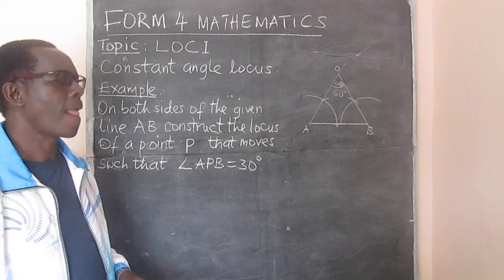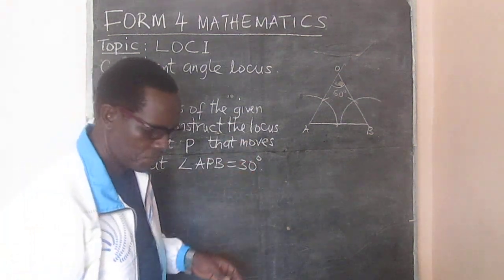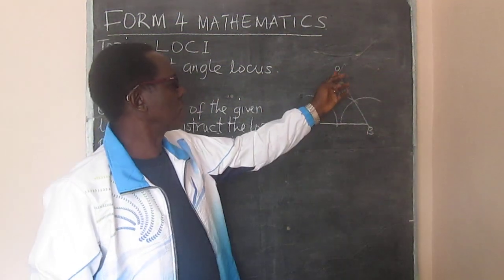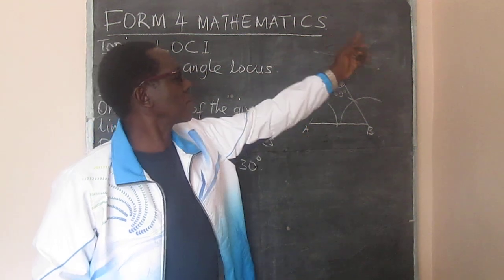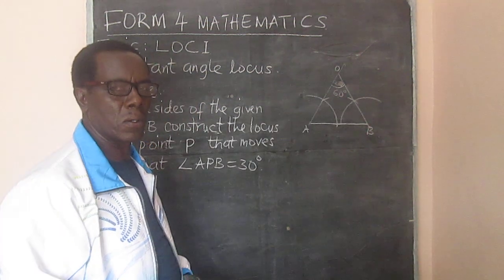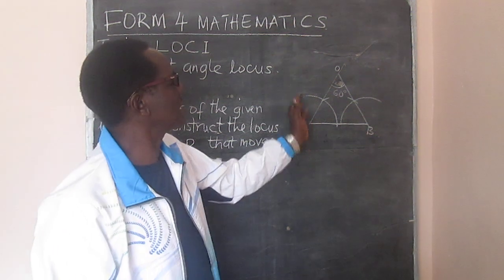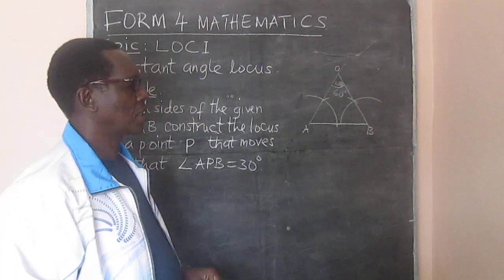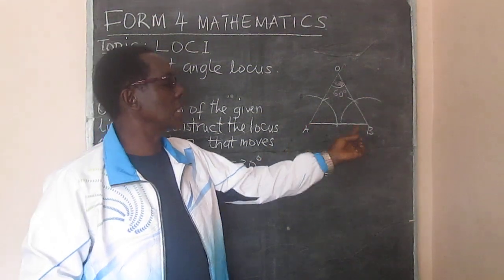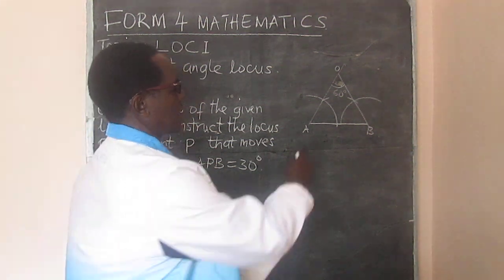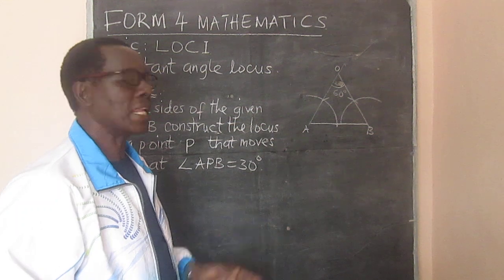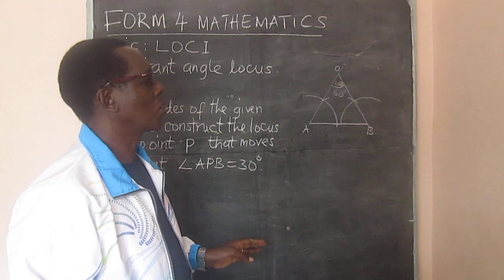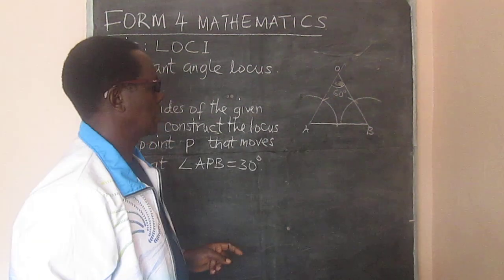It means then, if we place the sharp point of our compass at O and we use radius OA, we can complete a circle. We can complete a circle that will touch this line at A and at B, which makes AB now a chord. Once we do that, AB becomes a chord, and we know that any angle subtended at the circumference of that circle will be half of 60.